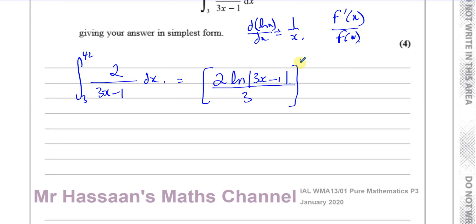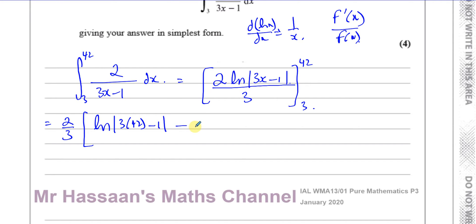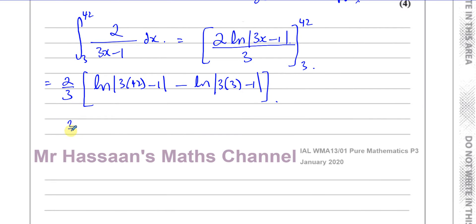I have to evaluate this between the limits of 42 and 3. So this gives me 2 thirds times ln of the modulus of 3 times 42 minus 1, minus ln of the modulus of 3 times 3 minus 1. Putting the values in: I'll have ln of 126 minus 1, which is 125.